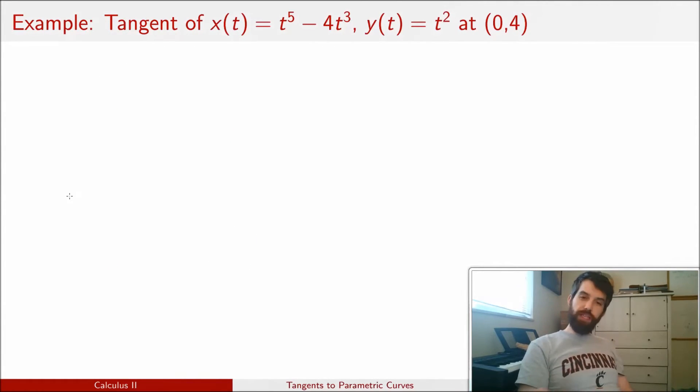Alright, so in this example, I've given you a parametric curve. I've got an x of t and I've got a y of t. And the question is, what is the equation of the tangent lines or perhaps just the slope of the tangent lines at this particular point, x equal to 0 and y equal to 4. So, according to our formula, I need to figure out x prime and y prime, the derivatives of x and y both with respect to t.